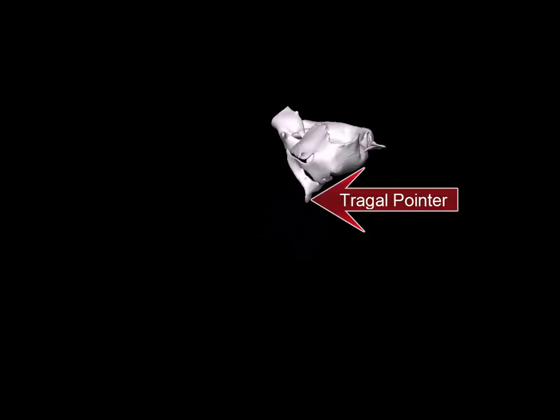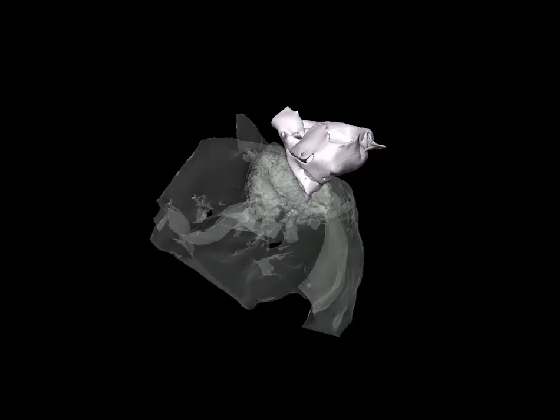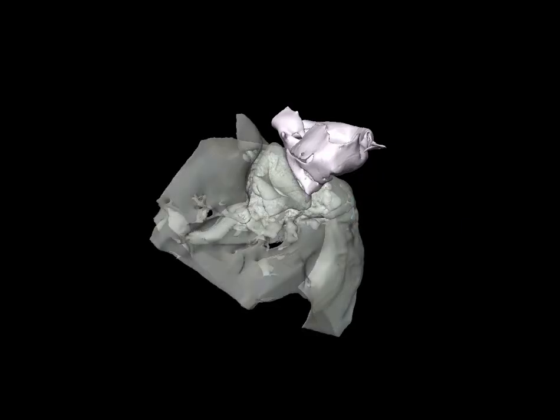This shows the left posterior two-thirds of a temporal bone. We'll take away all but the auricular cartilage to show the concha bowl and the up-folding of the concha bowl called the tragus and the tragal pointer. We will add the skull base to see some of the details of the bony anatomy.